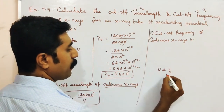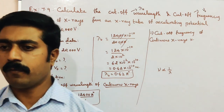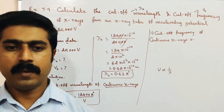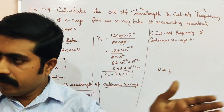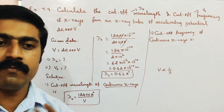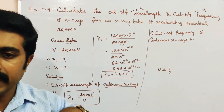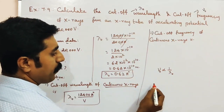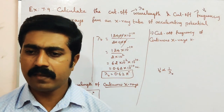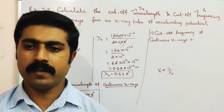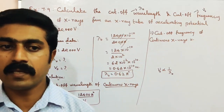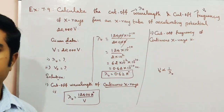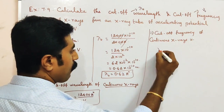Frequency is inversely proportional to wavelength. If wavelength decreases, frequency increases — they are inversely proportional. The stopping or cutoff wavelength corresponds to the maximum cutoff frequency. X-rays travel at the speed of light — they are massless but energetic, with no charge, traveling at light speed.